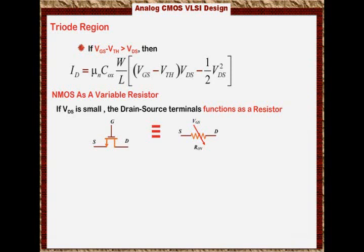So by changing VGS, I can change the slope of this voltage-current relationship, that means I can change the resistor. So now it is a voltage-controlled resistor. I can change this resistor by changing the voltage. And this is very powerful.